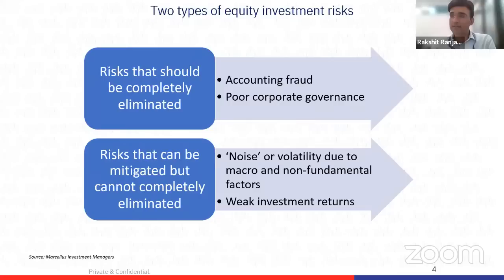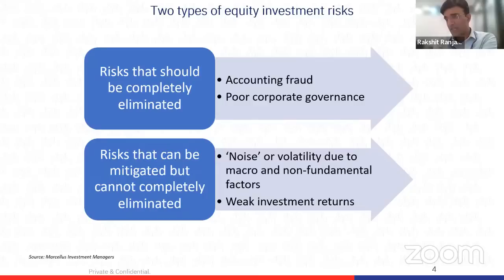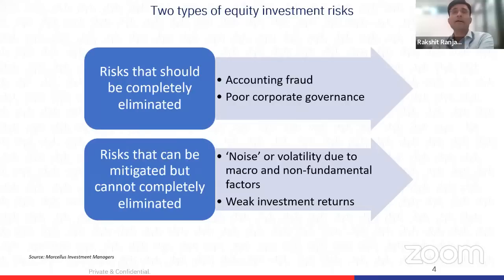These are risks such as accounting fraud or poor governance. These risks shouldn't just be mitigated — there should be an attempt to eliminate them entirely. There are several tools you can use to eliminate risks of accounting fraud and poor corporate governance. At Marcellus, we use our proprietary fraud detection framework to eliminate these binary risks. Our framework has both qualitative and quantitative aspects, which colleagues Ashwin and Tej have elaborated on in past webinars and newsletters.